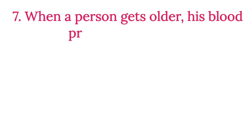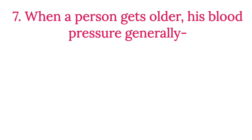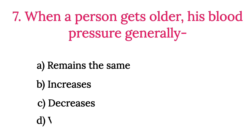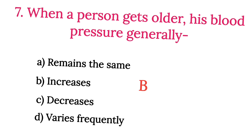MCQ Number 7: When a person gets older, is blood pressure generally increased? Option A: Remains the same. Option B: Increases. Option C: Decreases. Option D: Varies frequently. The correct option is Option B, Increases.